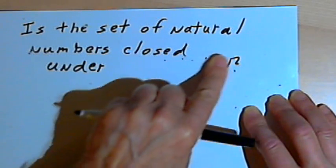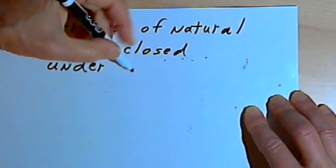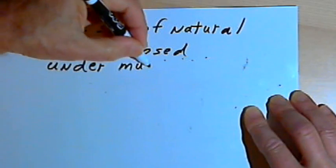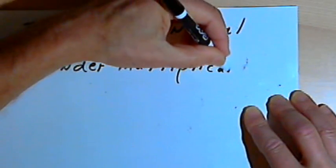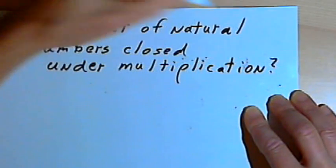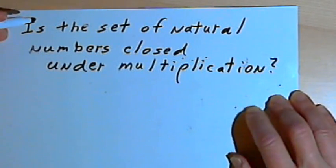Let's go on to multiplication. Is the set of natural numbers closed under multiplication?